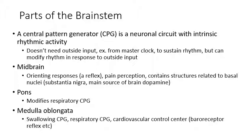Going down, you have the pons, which contains circuitry that modifies the respiratory central pattern generator located in the medulla oblongata. The medulla's respiratory central pattern generator controls your breathing by coordinating the muscle movements necessary for it. The pons has circuitry that speeds your breathing up or slows it down depending on what you need. In the medulla oblongata, in addition to the respiratory central pattern generator, you have the cardiovascular control center — controlling heart rate and vasoconstriction in your blood vessels — and the central pattern generator for swallowing.